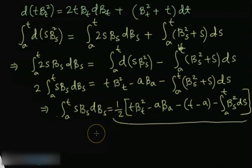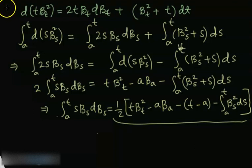So this is how I can show that my Itô integral of S times Brownian with respect to Brownian can be given by this expression. I hope that makes a little sense. In the next video we will meet with another example. If you want online sessions or discussions, you can comment below or send your email — we will contact you and discuss in online sessions if you need any guidance.